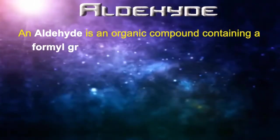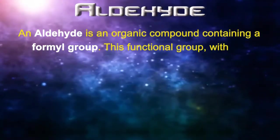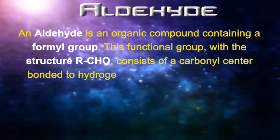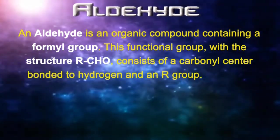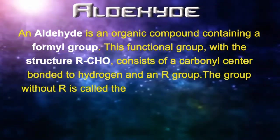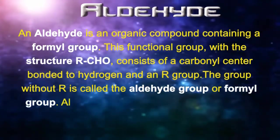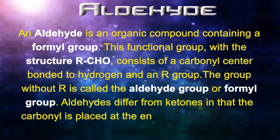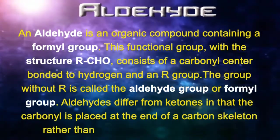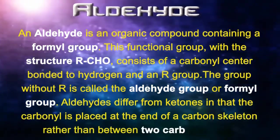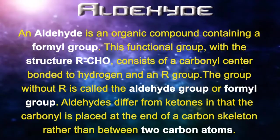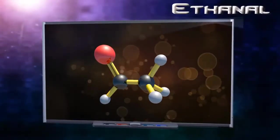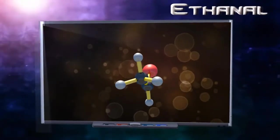Aldehyde. An aldehyde is an organic compound containing a formyl group. This functional group with the structure R-CHO consists of a carbonyl bonded to a hydrogen and an R group. Aldehydes differ from ketones in that the carbonyl is placed at the end of a carbon skeleton rather than between two carbon atoms.